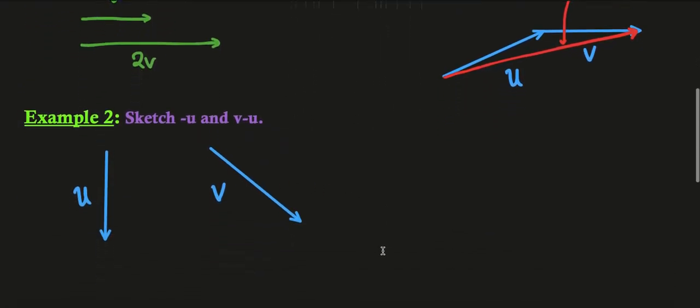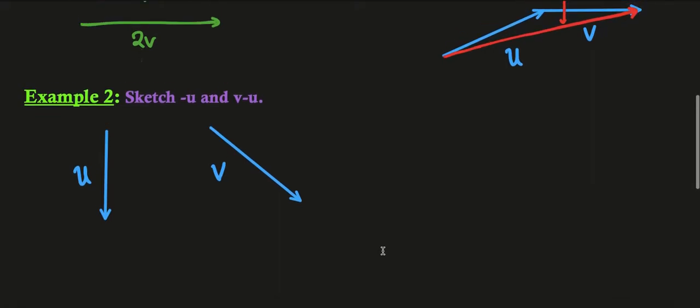Next example: sketch minus u and v minus u. If u is this, then minus u is just going to be the vector in the opposite direction. And then to do v minus u, what we're going to do is first do minus u, then we can do v.